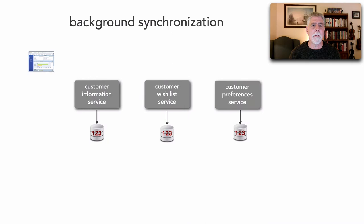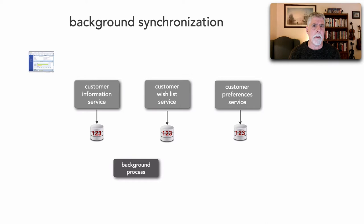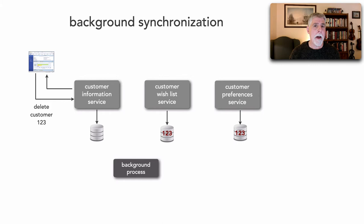The first pattern is background synchronization, where we have some sort of external process — this could be a batch job or something that wakes up on a cron every two hours — that is responsible for synchronizing all the data sources. Let's run the scenario: the customer information service receives the delete request, deletes the customer, and sends a response back. Then, say that was at 11 o'clock — in the middle of the night, the batch process wakes up, detects that customer 123 has been deleted, and correspondingly removes it from the other data sources, keeping all the data in sync.